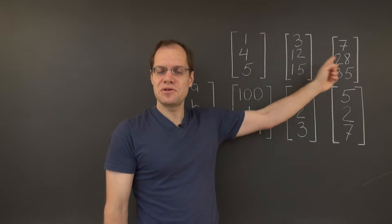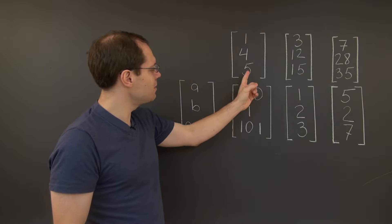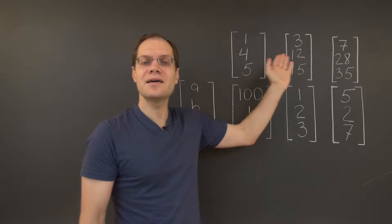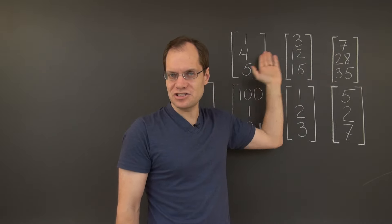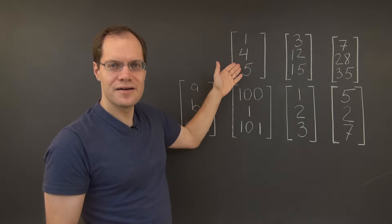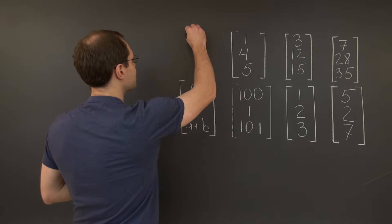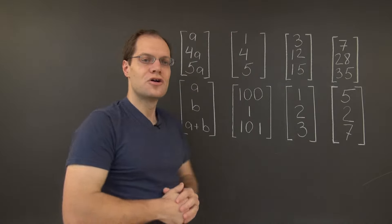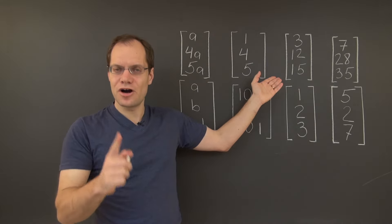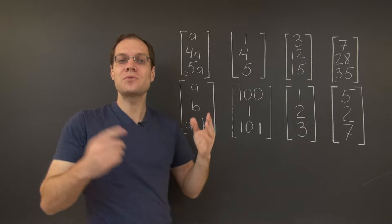However, these three vectors are clearly all multiples of one another. So all you can get by linear combinations of these three vectors is {A, A, A} — a one-dimensional span. We see that in this case, the same argument would have led to the wrong conclusion.